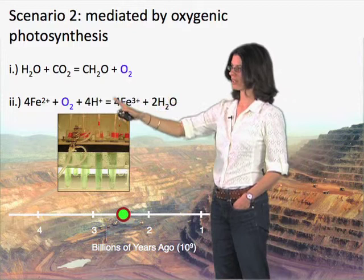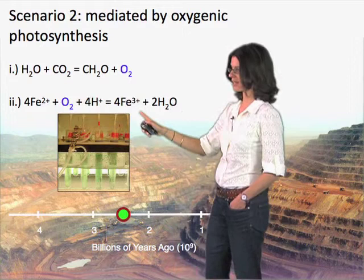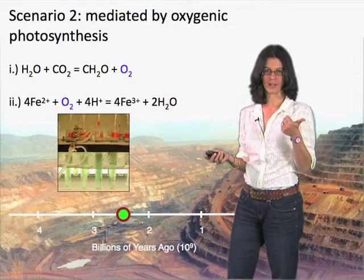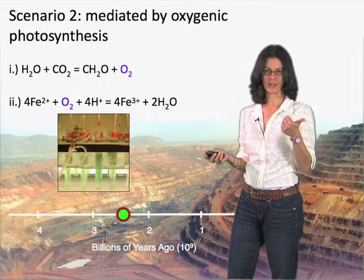Once cyanobacteria produced this oxygen, it would have been able to react chemically with ferrous iron, oxidizing it to ferric iron, which in turn would go down the pathway to precipitate these rusty minerals. So here we have two options: one scenario where no oxygen is involved, and a second scenario where oxygen is mandatory. Both of these are biological processes.